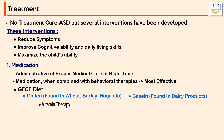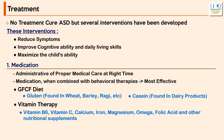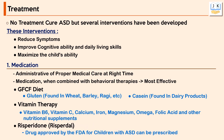Mega vitamin therapy — including vitamin C, B6, magnesium, DMG, omega, folic acid, and other nutritional supplements — is commonly used to treat children with autism. Risperidone is one drug approved by the FDA for children with autism spectrum disorder and can be prescribed for children between 5 and 16 years old to help with irritability.